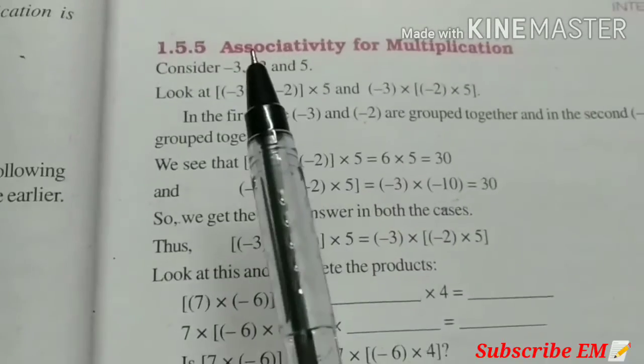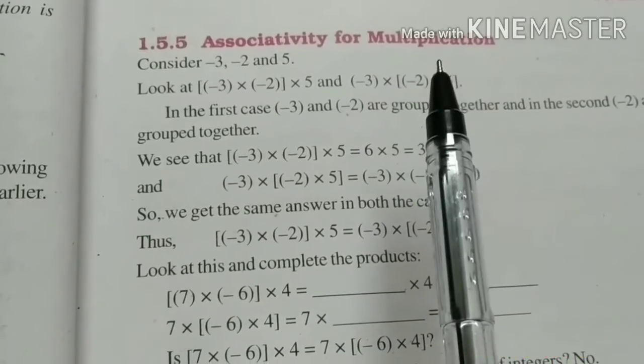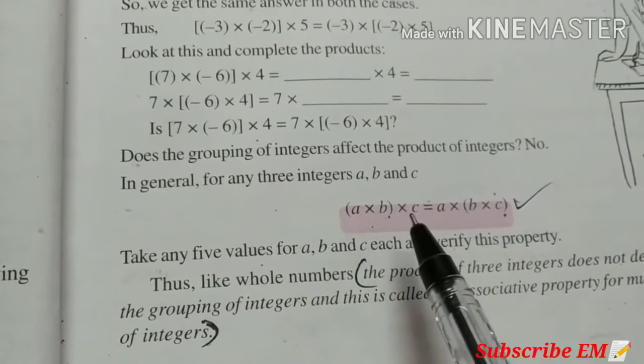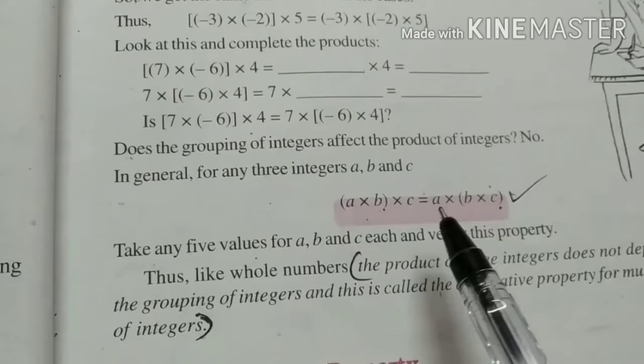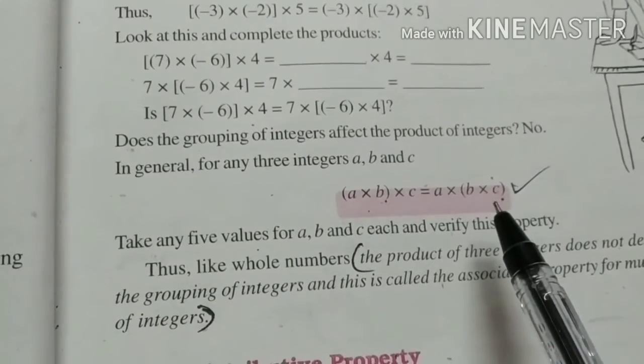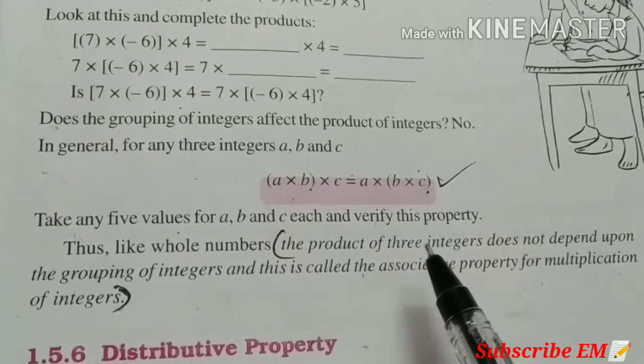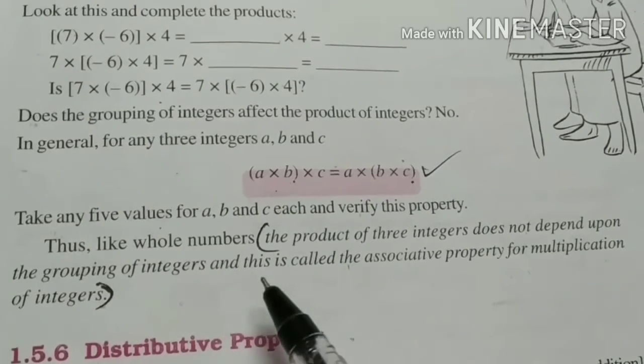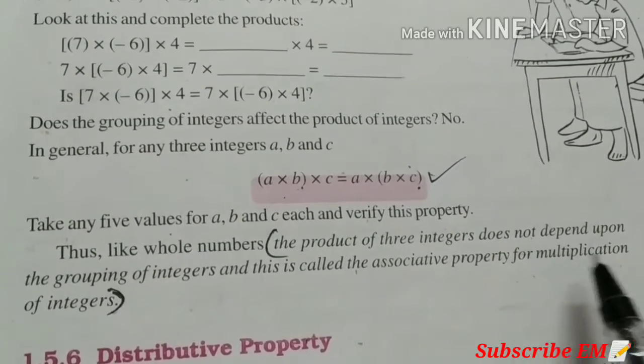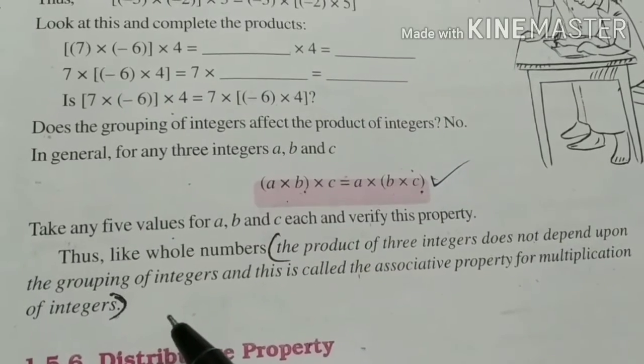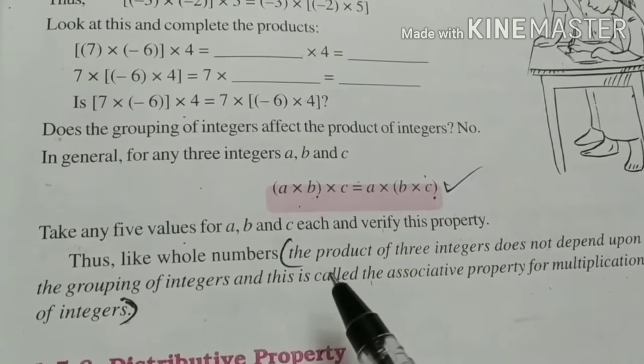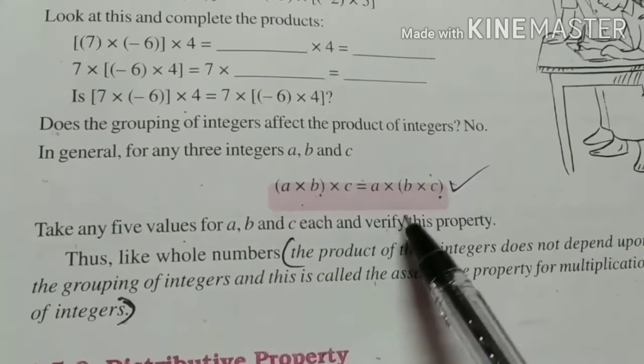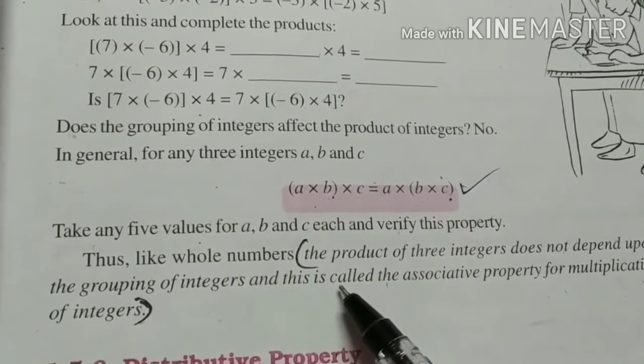5th property is associativity for multiplication. Here you can see, A into B into C is equal to A into in bracket B into C. That is, the product of three integers does not depend upon grouping of integers. And this is called associative property for multiplication of integers. Here A and B are grouped. Here B and C. So, it does not depend upon grouping of integers.